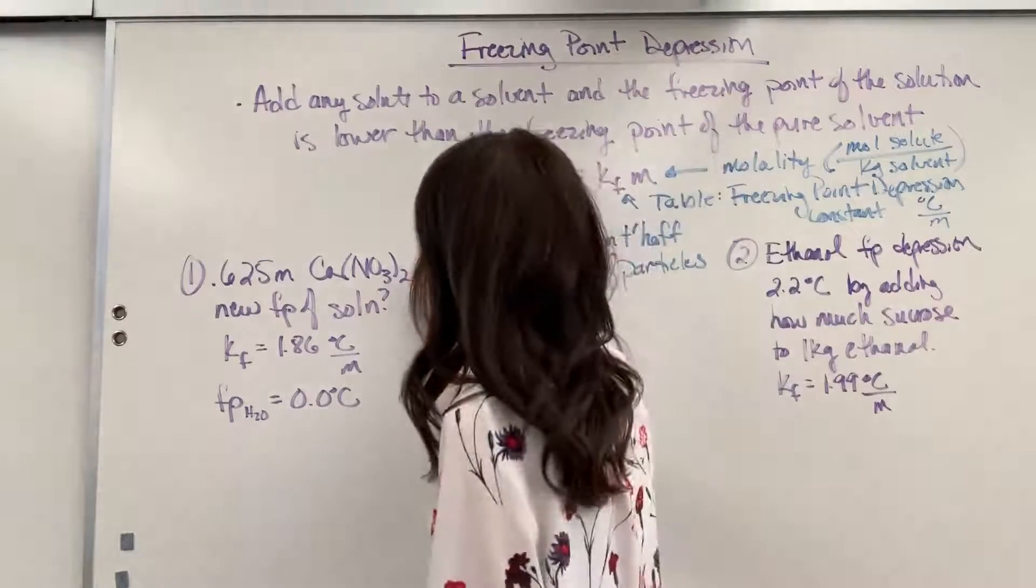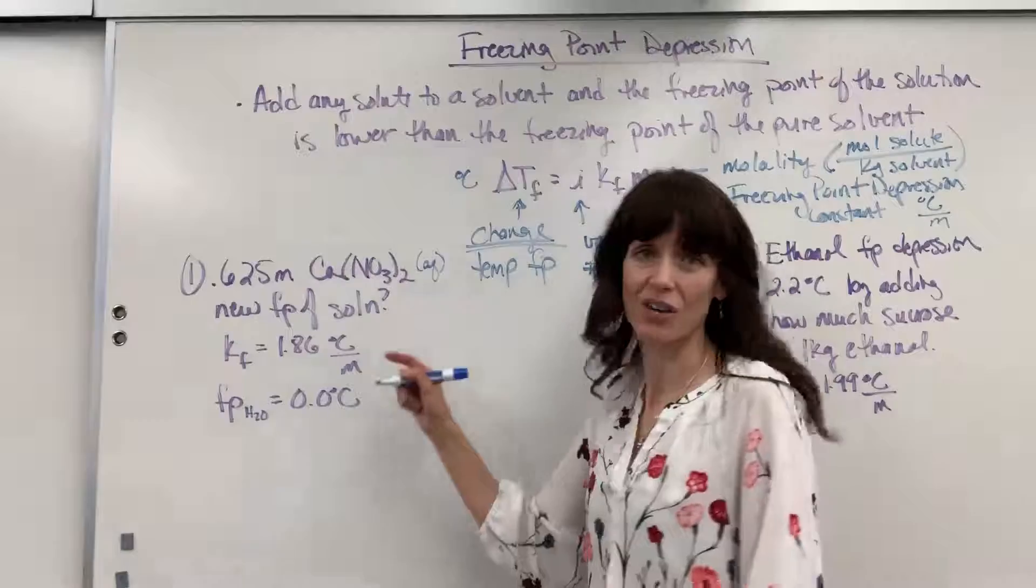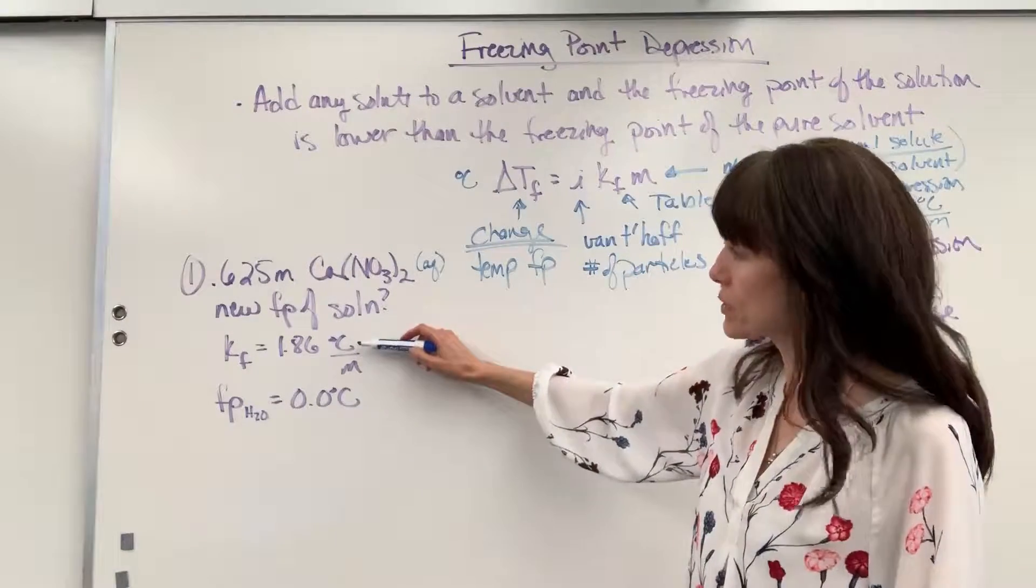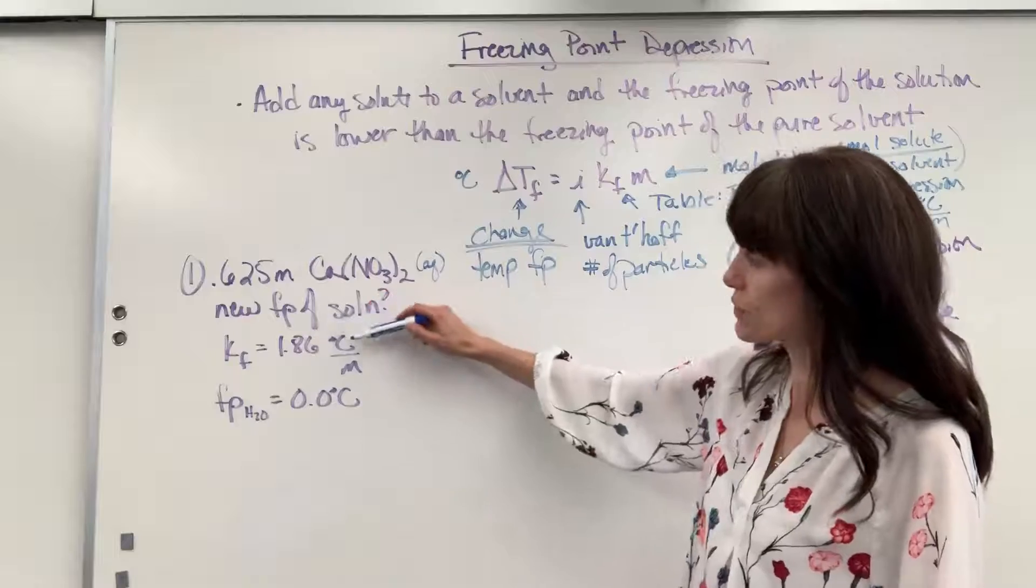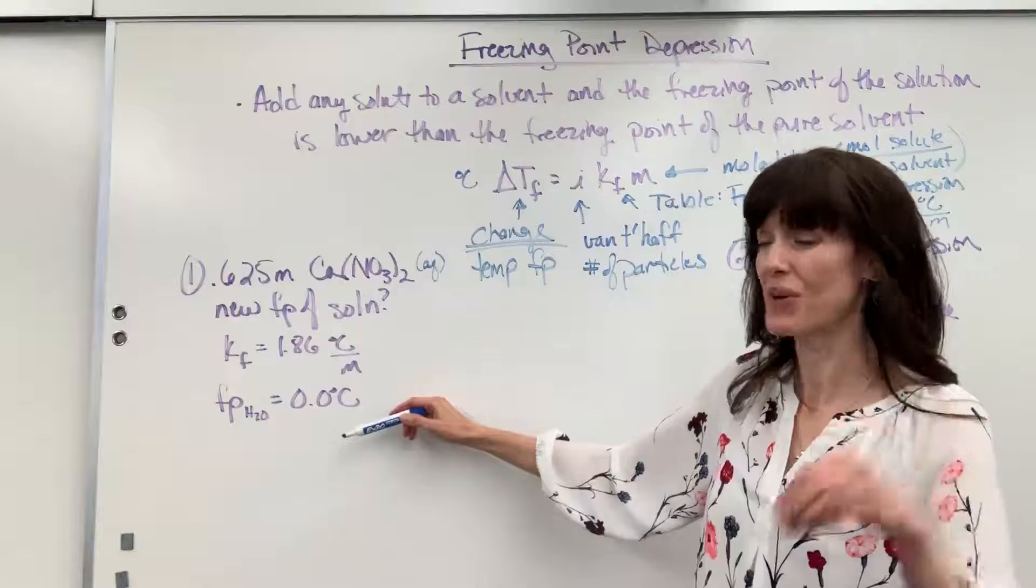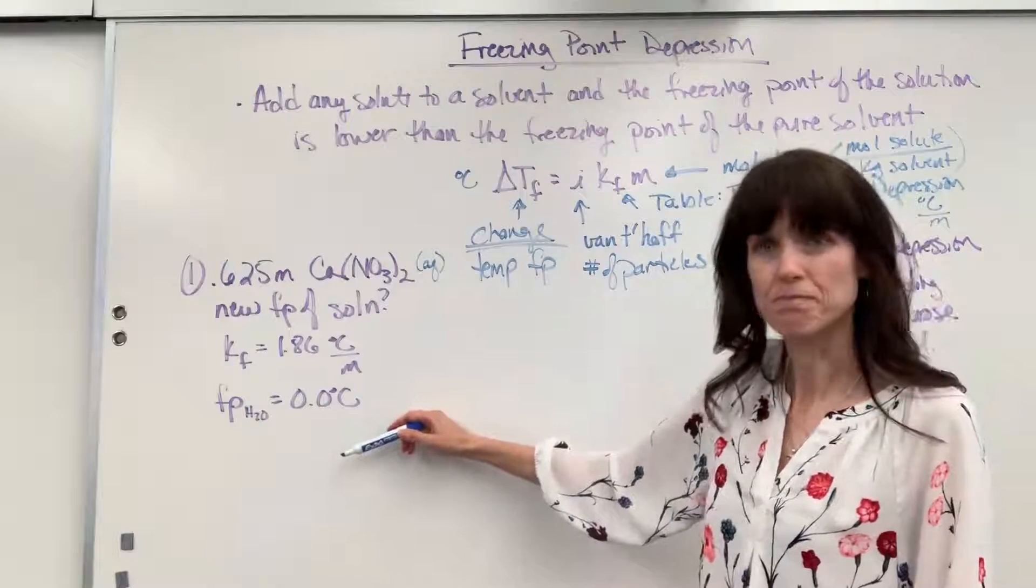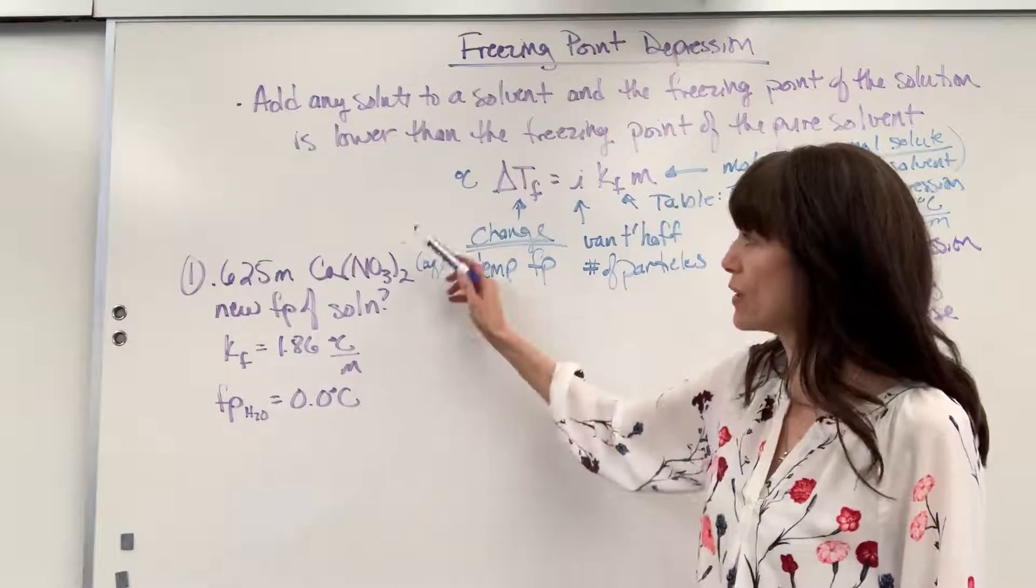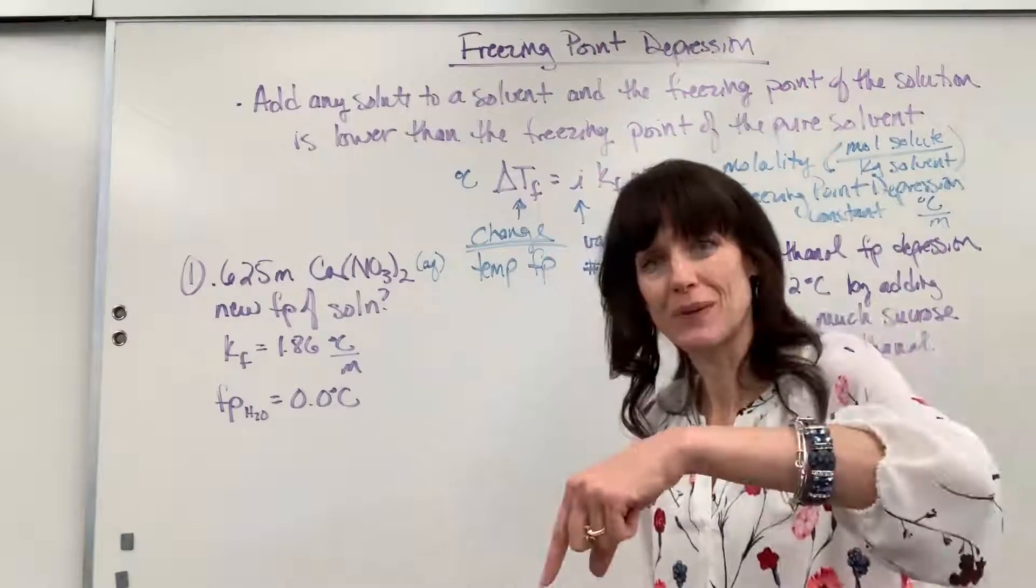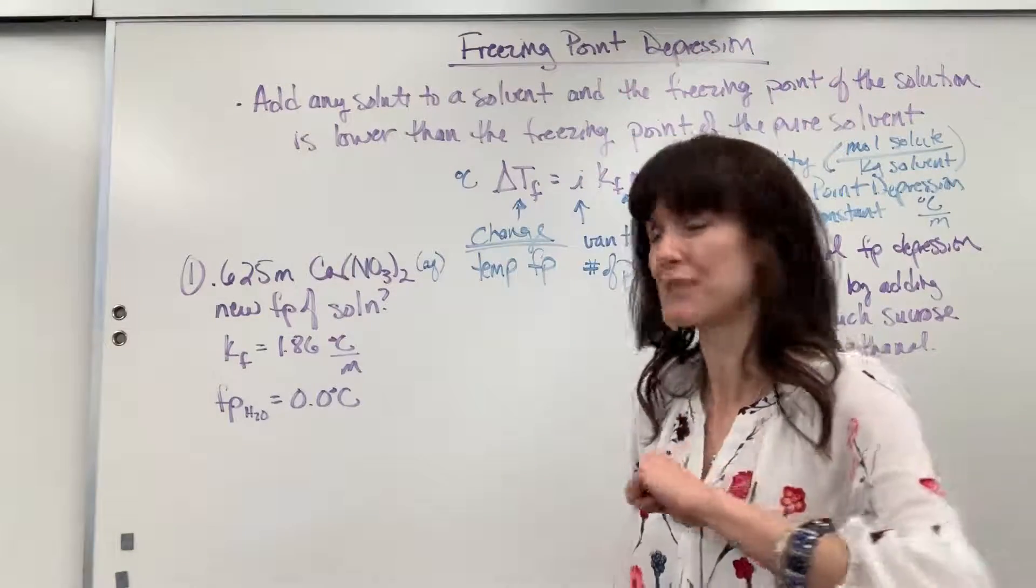Now this, I should have put this here, it's going to be aqueous. We've dissolved that in water. And so I put a note, I looked this up. The freezing point depression constant is 1.86 degrees C per molal for water. And we all know the pure freezing point for water is 0 degrees C. So we want to know if we put in this concentration into the water, how much are we going to depress that freezing point?